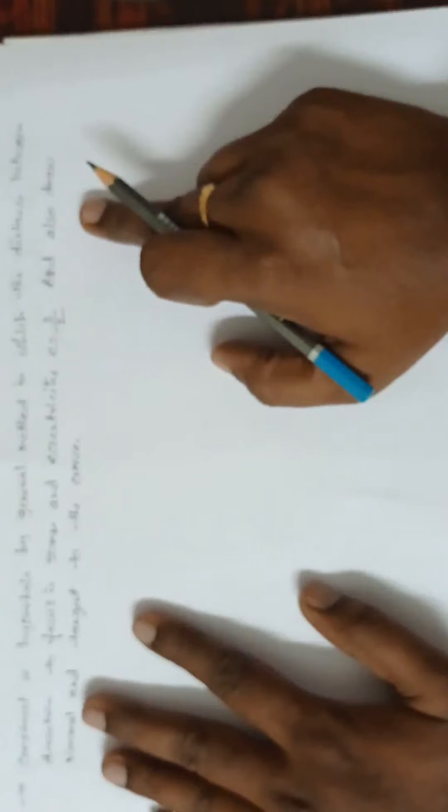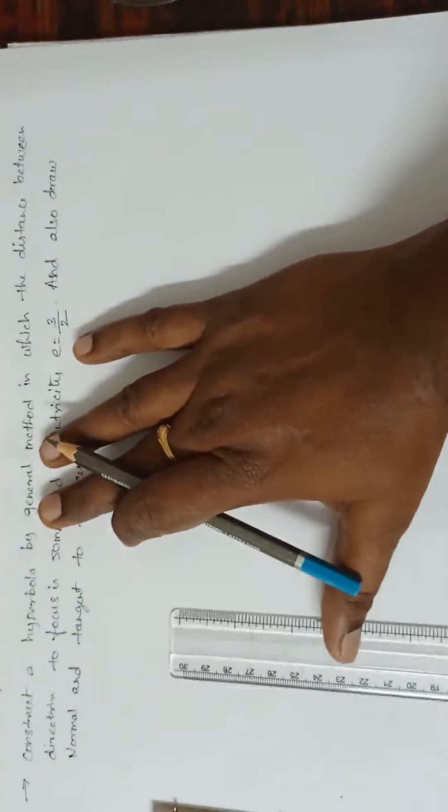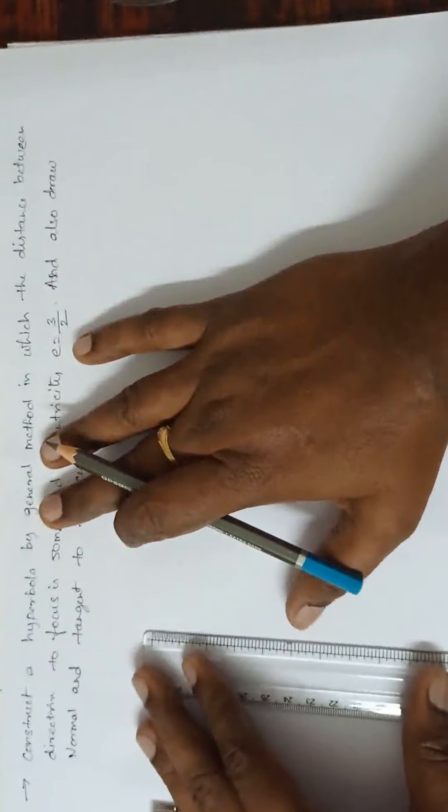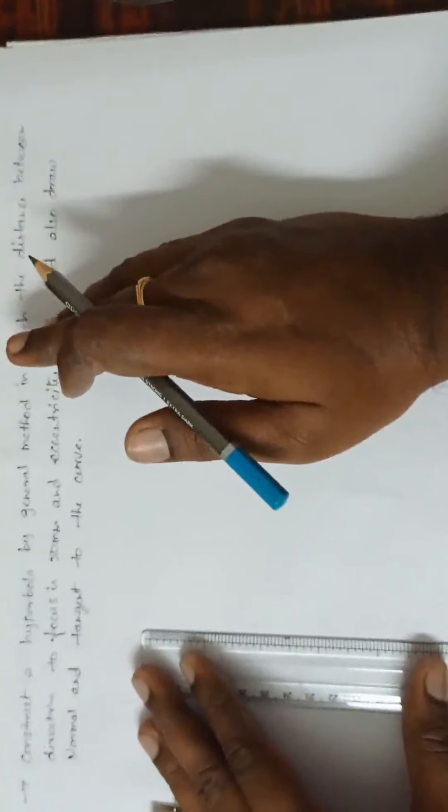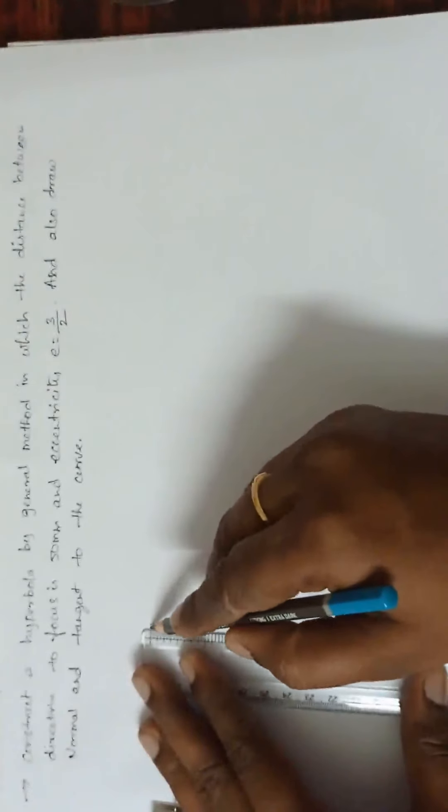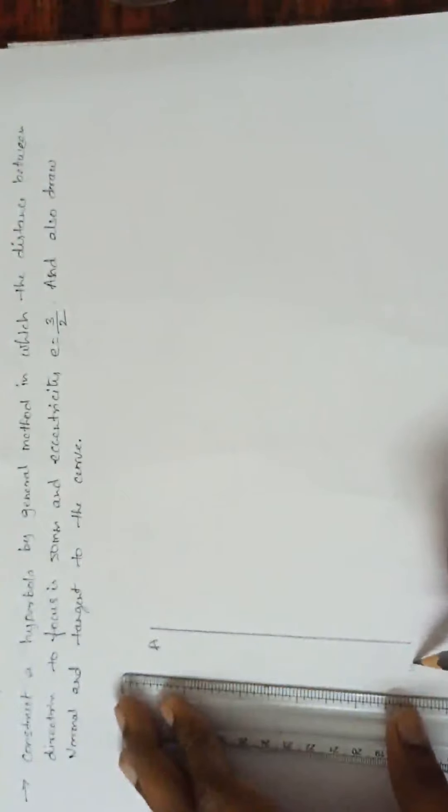And also draw normal and tangent to the curve. Now, first what to do? First, we have to draw a directrix line. That is AB. This is A and this is B.